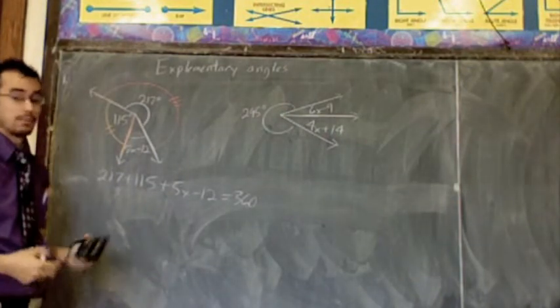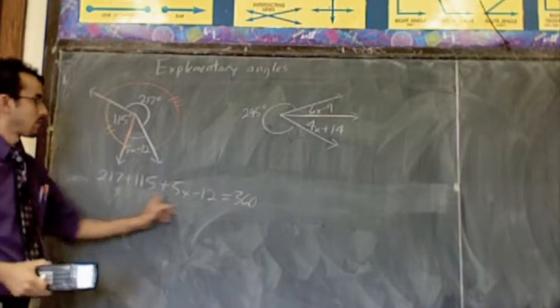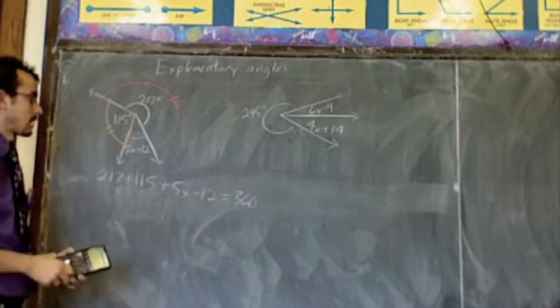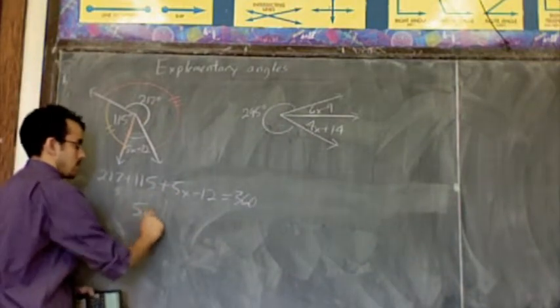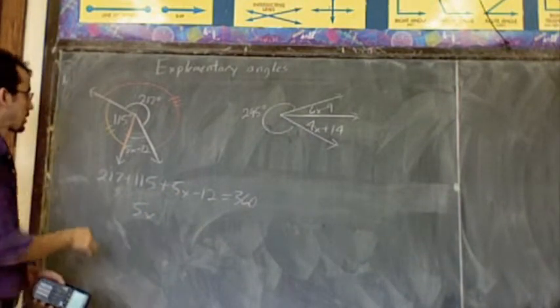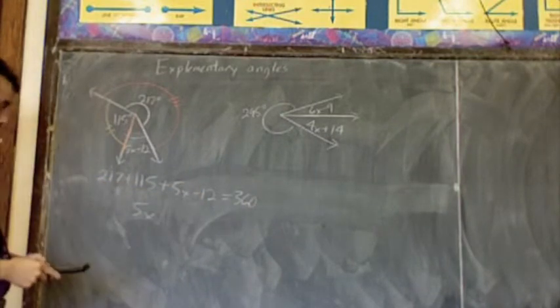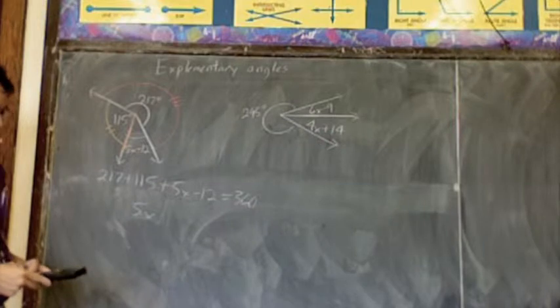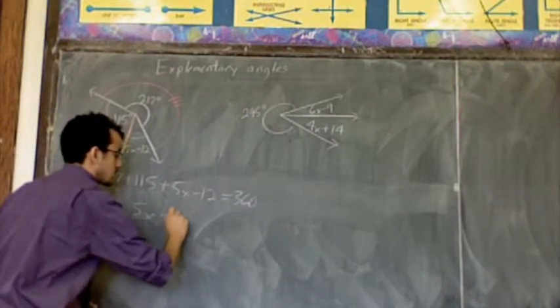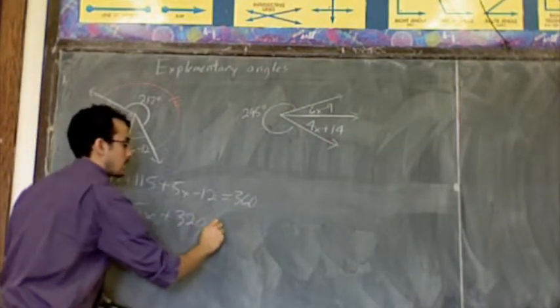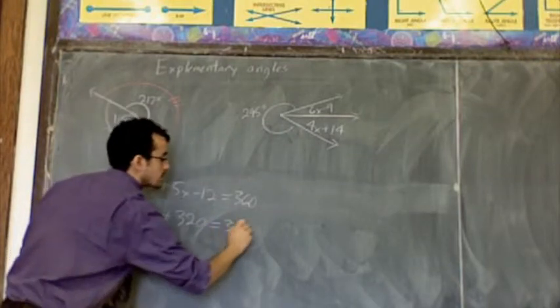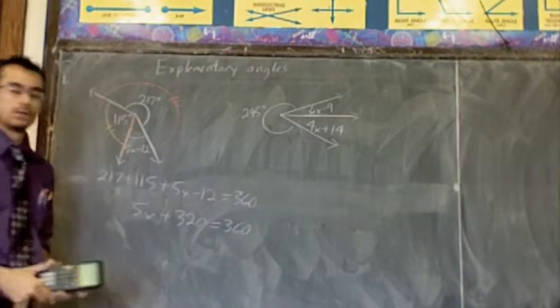Alright, now I've got some stuff to combine, like terms. Well, I only have one thing that has an x in it, this 5x, so I'm just going to bring that down. Now I'm going to combine everything else. 217 plus 115 minus 12. Take my calculator. 217 plus 115 minus 12, I get 320. So, plus 320. And that equals 360.